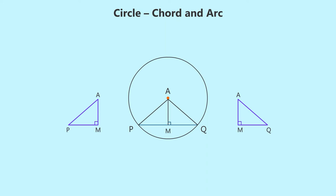Let us try to use the hypotenuse-side test for right angle triangles. The hypotenuse AP and AQ of both the triangles have the same length since both are radii of the circle, and side AM is common.